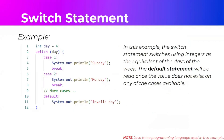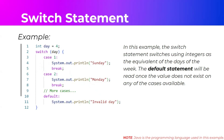For example, we have integer variable day equal to 4. Based on the pattern, we are dealing with days of the week: Sunday is 1, Monday is 2, Tuesday is 3, Wednesday is 4, and so on. So the output would be 'Wednesday'. If we change day to 8, since there are only 7 days in a week, it falls under the default block and prints 'invalid day'.